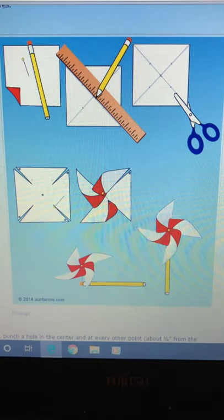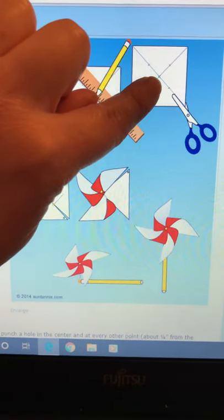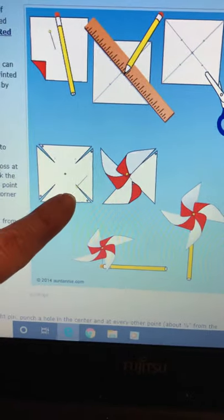Once you've done that you will need to snip partway down the line making sure you don't snip down to the centre. It should look a little bit like this.